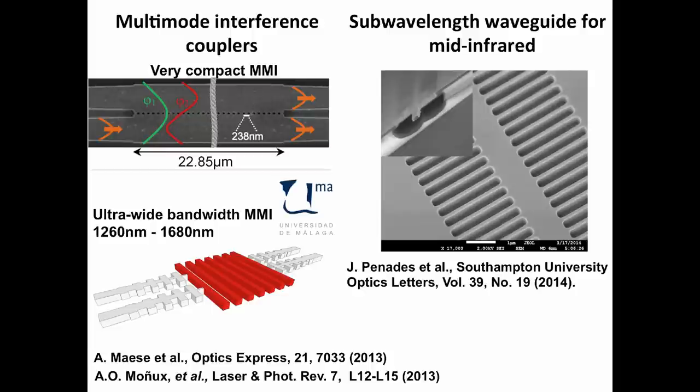And finally, this is an example of a subwavelength silicon waveguide that can operate over a wide infrared range, in principle from 2 to 8 micrometers, recently developed by the group of Professor Goran Masanovic at the University of Southampton.